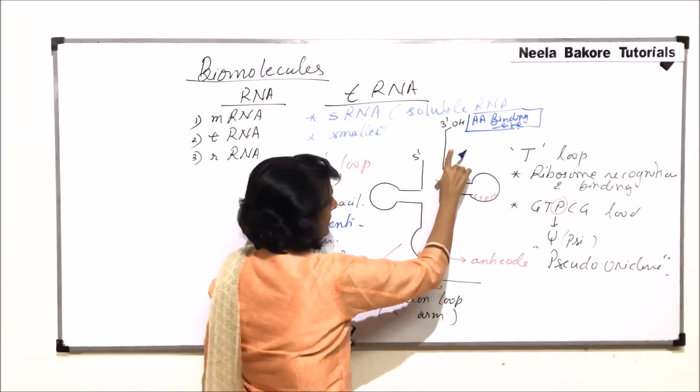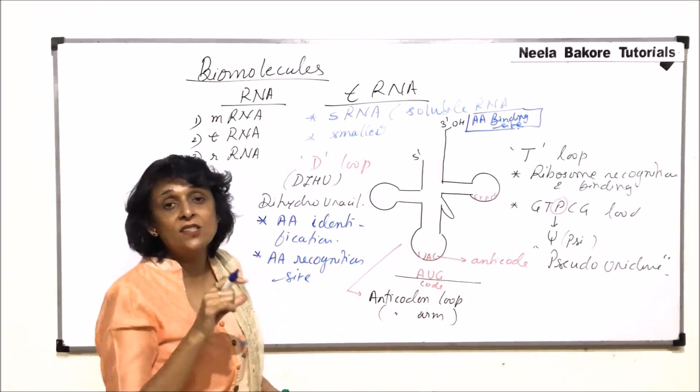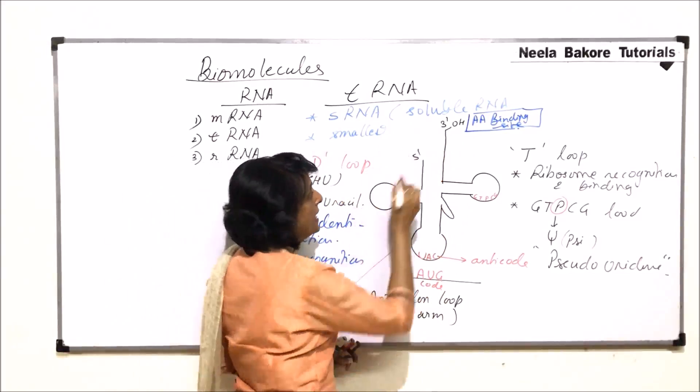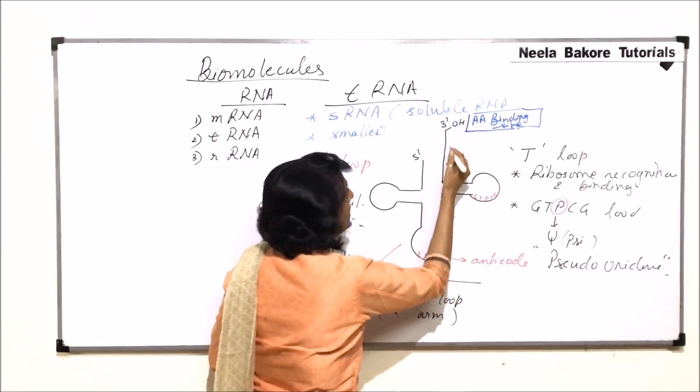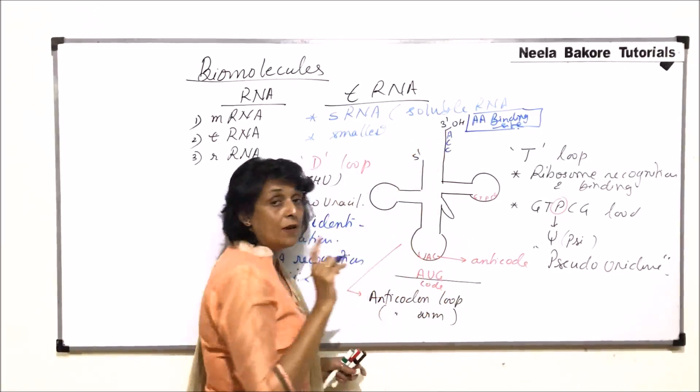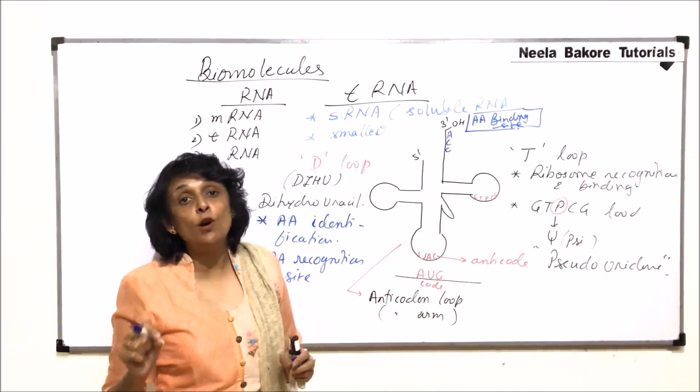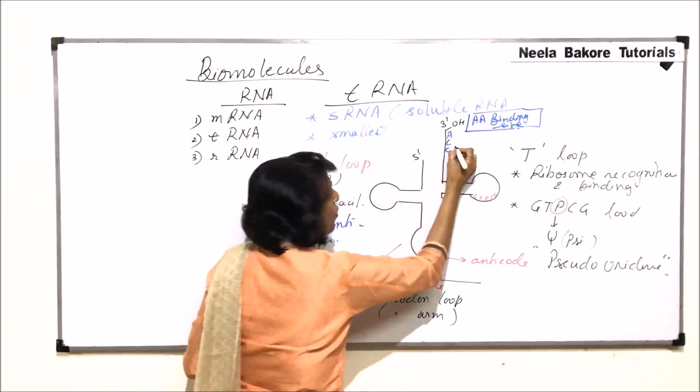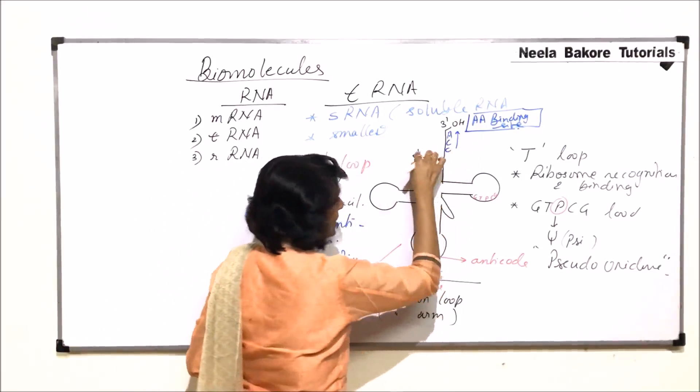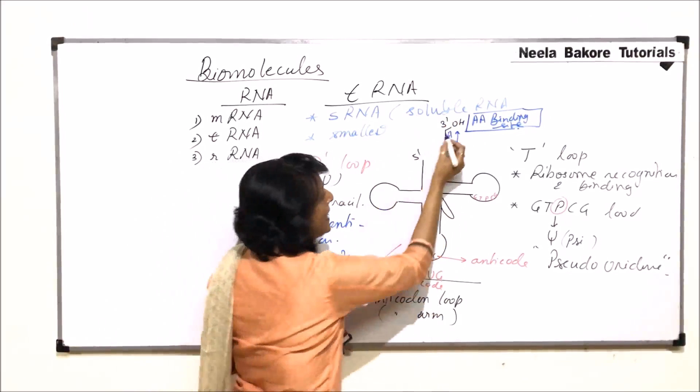At the third end this strand which is at the third end and it is slightly extended. We call it overhang. Here the last code is C-C-A. We always read the code from 5' towards 3'.